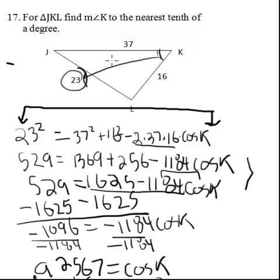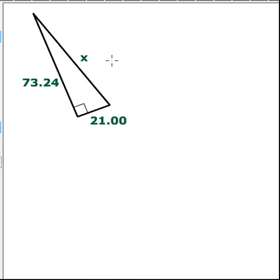Let's take a second to look at how the law of cosines is completely consistent with the Pythagorean theorem. Here we have a right triangle and let's see what happens when we apply the law of cosines to find x. We know from the Pythagorean theorem you could just say x squared equals 73.24 squared plus 21 squared, but using the law of cosines we could also write x squared equals 73.24 squared plus 21 squared minus 2 times 73.24 times 21 cosine of 90 degrees, in this case dealing with a right triangle.